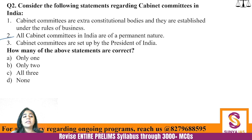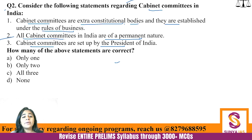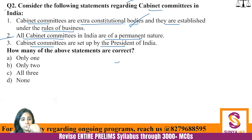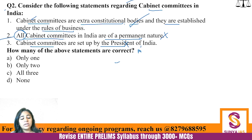Question 2: Consider the following statements regarding Cabinet Committees. (1) Cabinet Committees are extra-constitutional bodies. (2) They are established under the Rules of Business. (3) All Cabinet Committees are of permanent nature. (4) Cabinet Committees are set up by the President of India. How many are correct? Only one — the first statement that they are extra-constitutional bodies is correct. All-based statements are almost always incorrect. Some are ad hoc in nature. And they are set up by the Prime Minister, not the President.